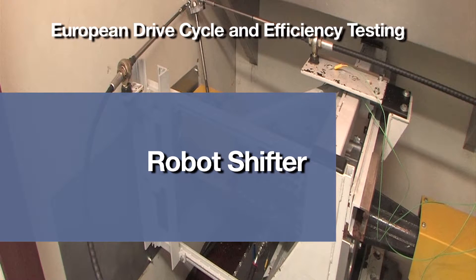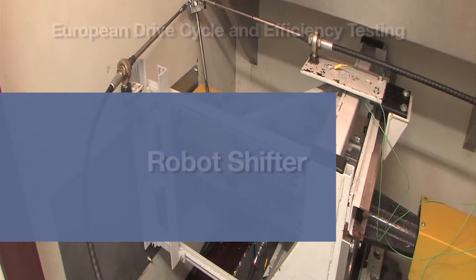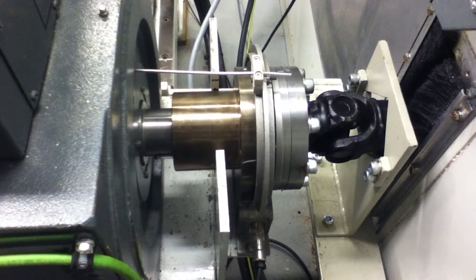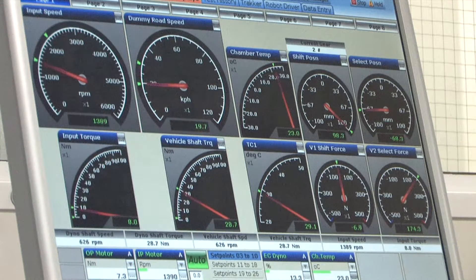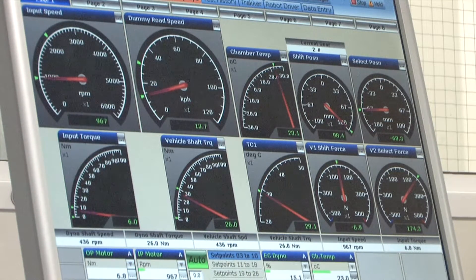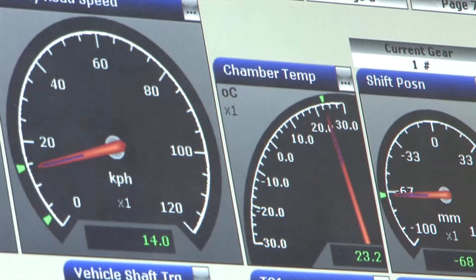A robot shifter operates the transmission. Torque sensors on the input and output shafts measure the power in and out of the transmission. Temperature data are also recorded for the oil throughout the drive cycle.